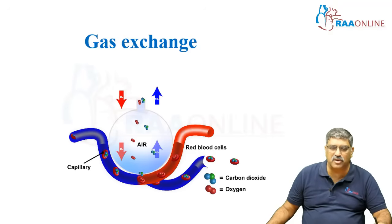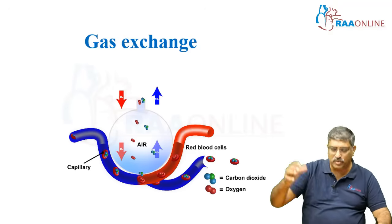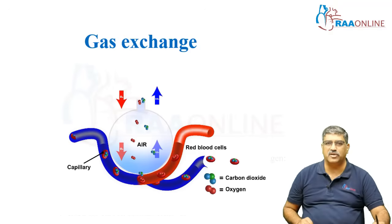The reverse happens with carbon dioxide. Carbon dioxide from the tissue comes into the blood, then into the alveoli, and moves out into the atmosphere.